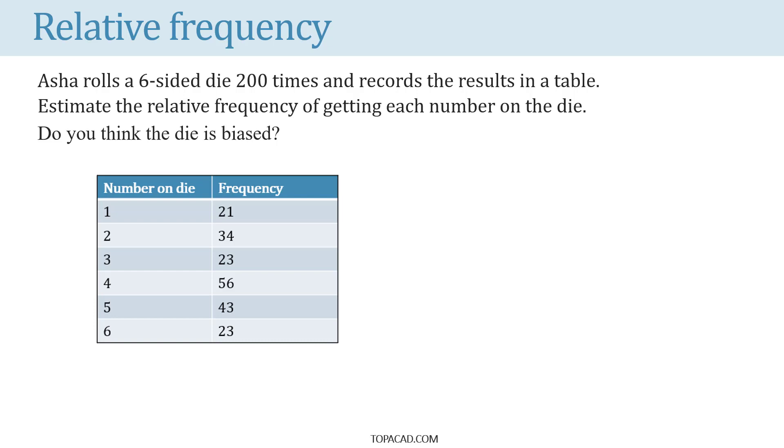Asha rolls a six-sided die which means you can either get 1, 2, 3, 4, 5 or 6 when she rolls a die.